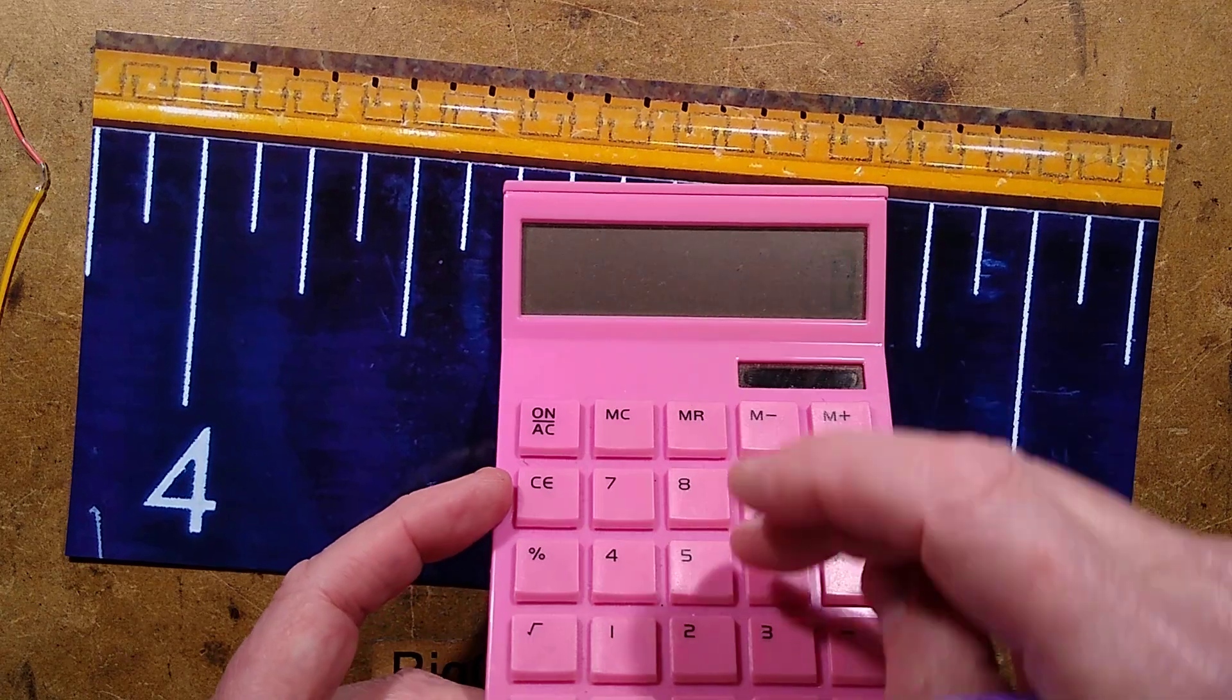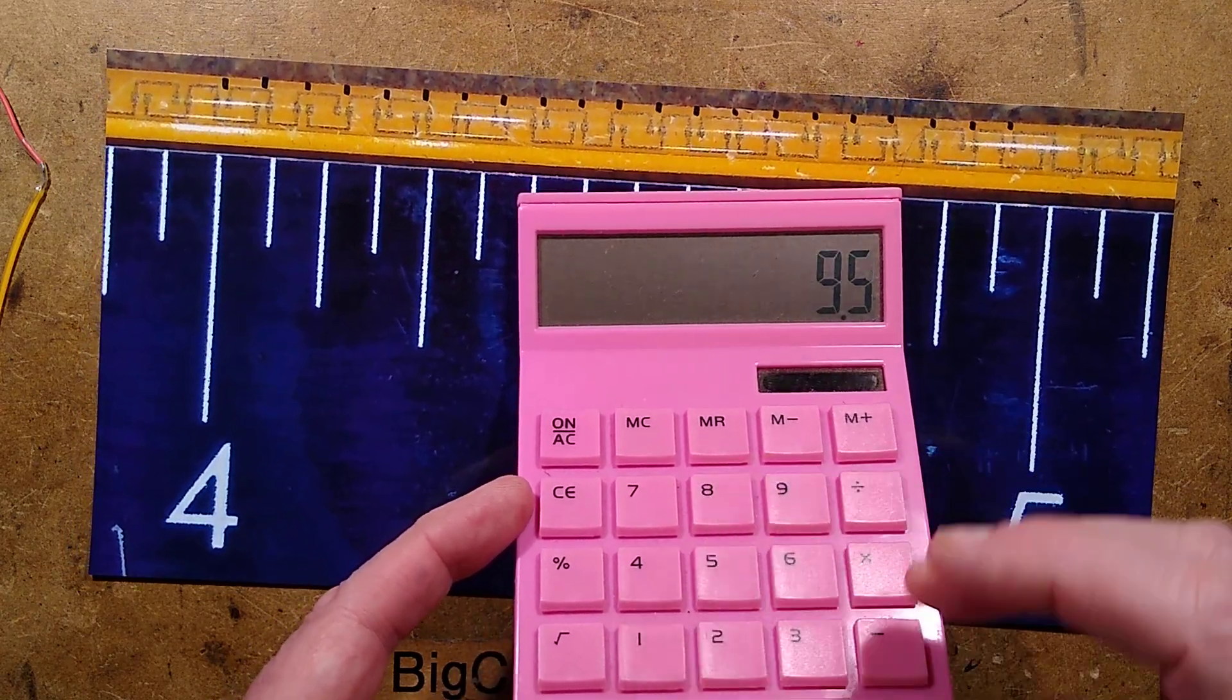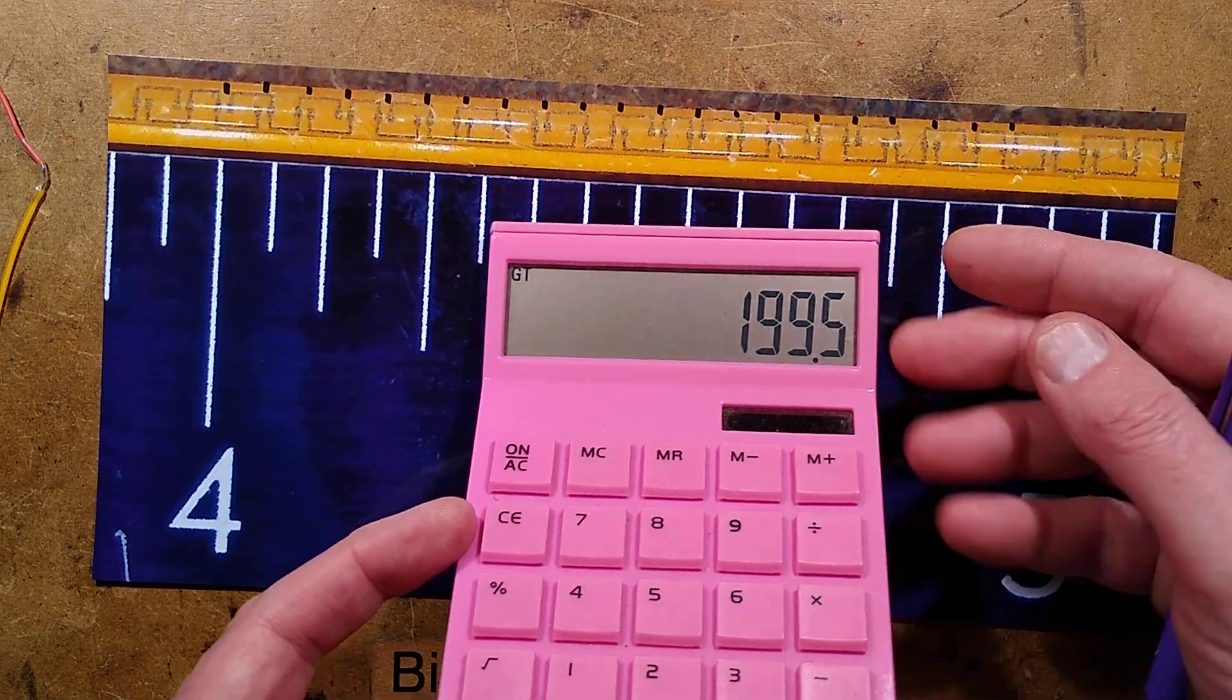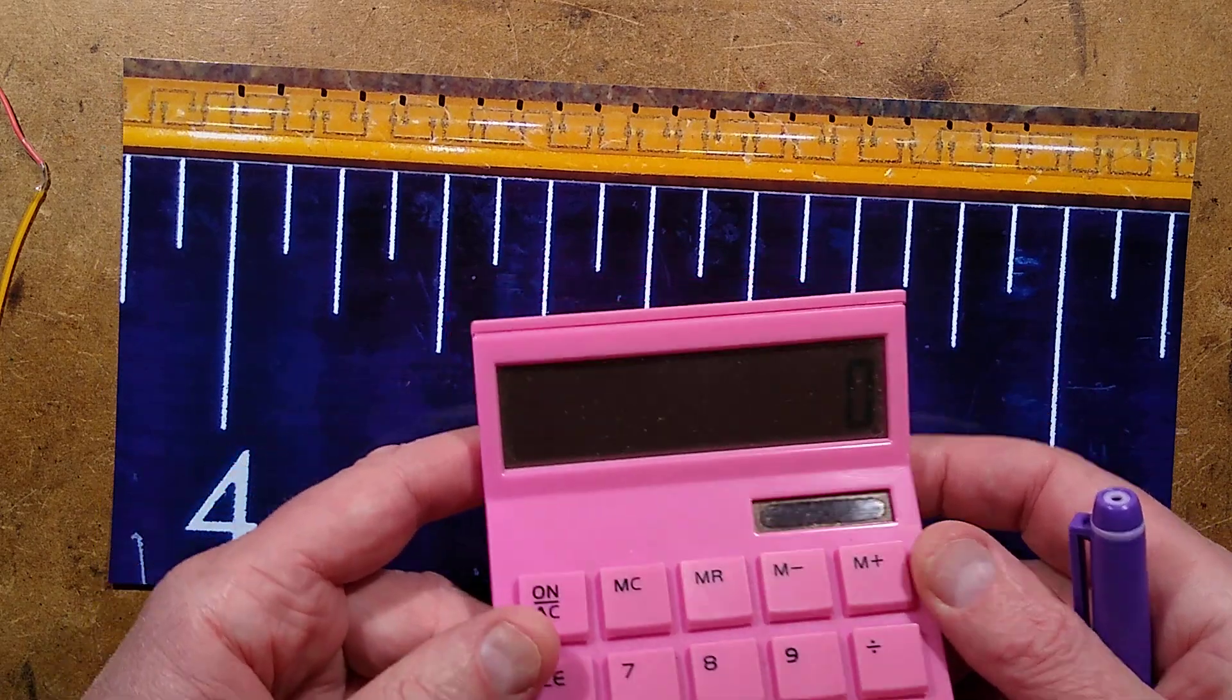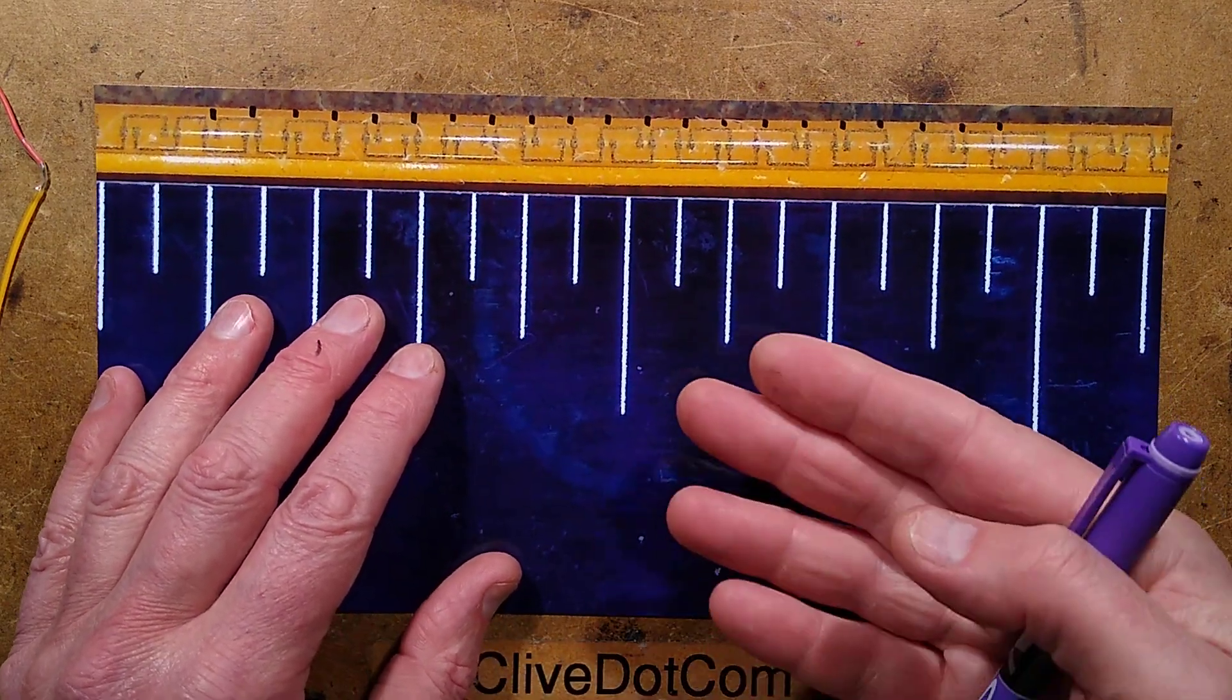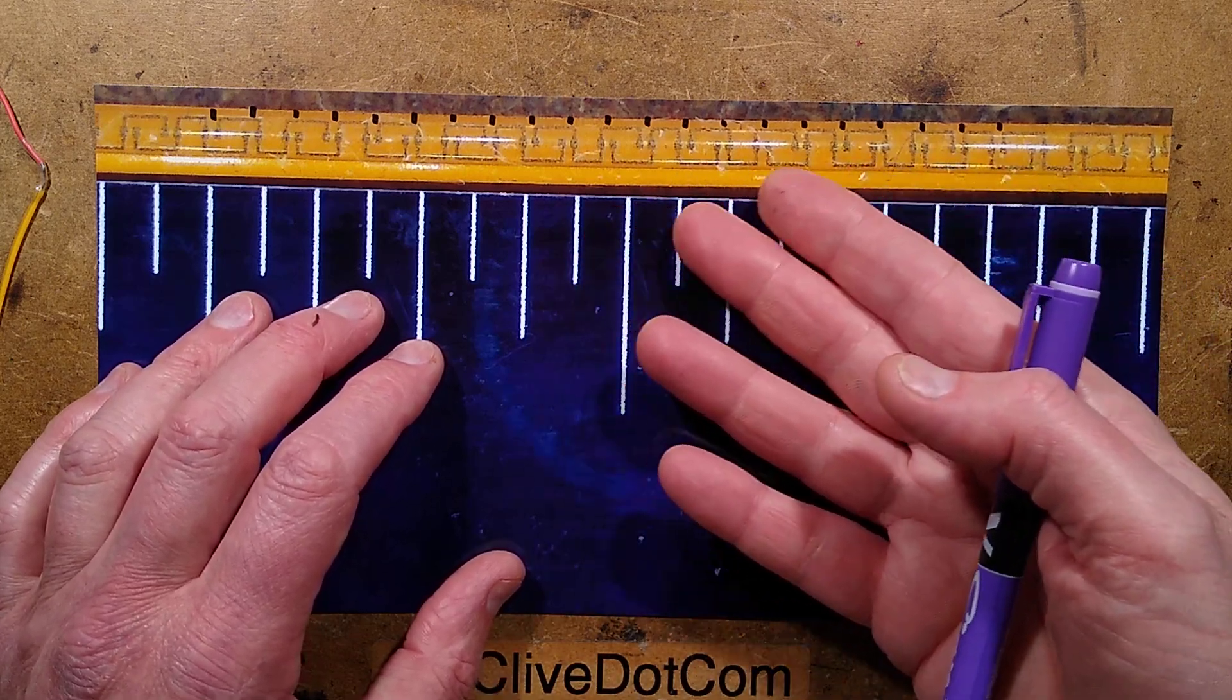So 21 LEDs times 9.5 inches equals 199.5. That's as good as, you know, I'm not going to count all the LEDs in this, I'll just keep losing track. I'm going to say 200 LEDs, but because they are wired in parallel pairs, that's effectively 100 LEDs drop forward voltages.